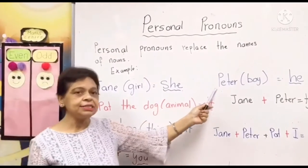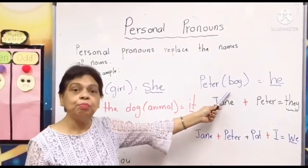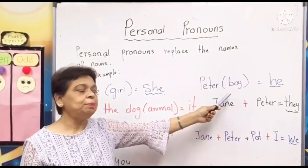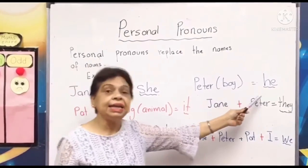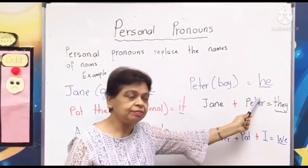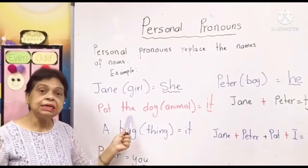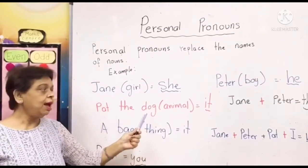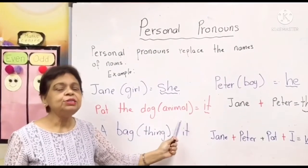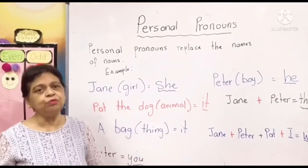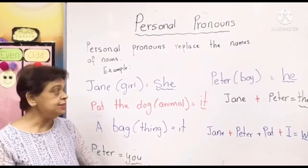Next, Peter. Peter is a boy. The personal pronoun used for boy is 'he.' The next one — Pat, the dog. The dog is an animal. So what is the personal pronoun for dog, an animal?